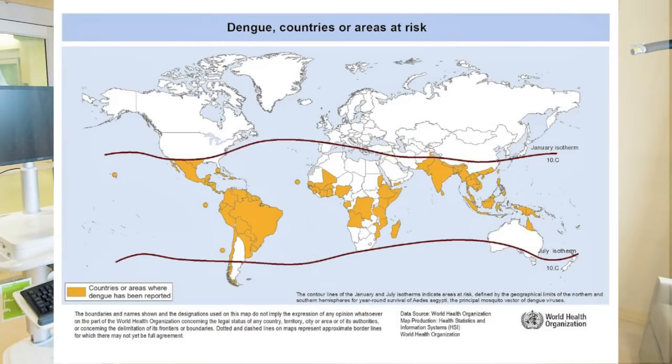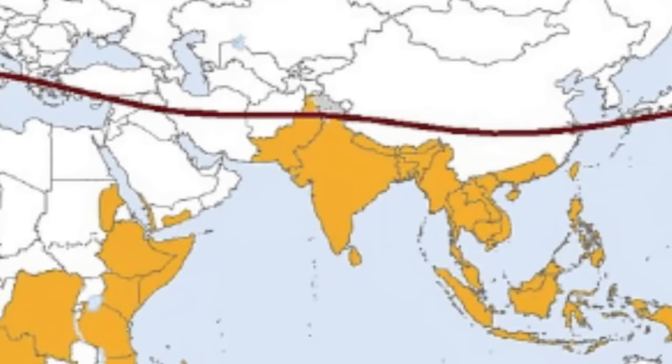Dengue, which is also commonly pronounced as 'dengee,' is a mosquito-borne viral infection caused by the dengue virus. Dengue fever occurs most commonly in tropical and subtropical countries like India, which has a hot and humid climate. According to the WHO, 50 to 100 million dengue infections occur annually in more than 100 endemic countries worldwide.